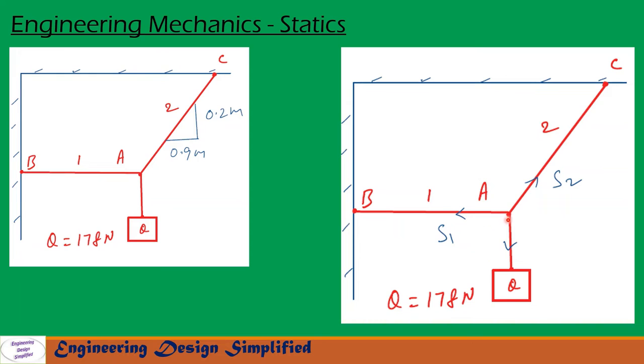First, let us see forces and reactions. The weight Q is acting vertically downwards. This side of the string experiences tension S1 acting horizontally in this direction. This side of the string experiences tension S2, with the direction shown here.